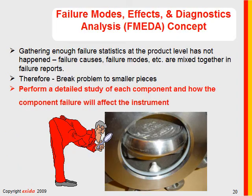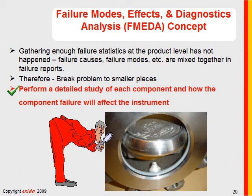FMEDA is a predictive failure concept that can be used on brand new designs based on design strength. It was derived because gathering sufficient failure statistics at the product level has not happened — neither manufacturers, end users, nor engineering companies do a good job gathering failure statistics, and when they do, the statistics aren't available until the product is obsolete. Therefore, we use failure statistics at the component level, breaking a design into its components and performing a detailed study of how each component affects the instrument.